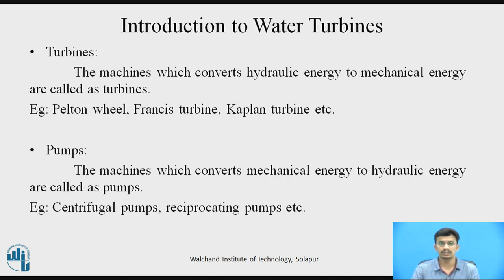Turbines are machines which convert hydraulic energy to mechanical energy. Typical examples of turbines are the Pelton turbine, Francis turbine, and Kaplan turbine. Pumps are machines which convert mechanical energy to hydraulic energy. Examples of pumps are centrifugal pumps and reciprocating pumps.